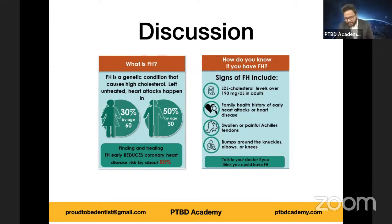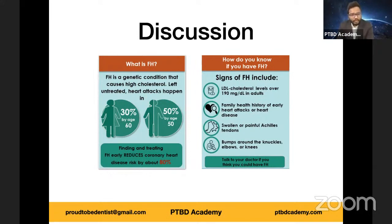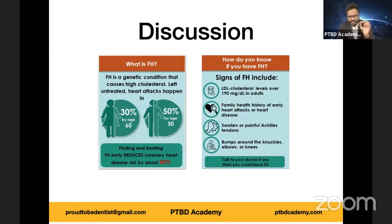Familial hypercholesterolemia is a genetic disorder with considerable frequency. One of the main diagnostic lab parameters is LDL levels — in adults, LDL cholesterol over 190 mg/dL, and in children over 160 mg/dL, coupled with a family history, allows us to suspect or diagnose familial hypercholesterolemia. These threshold values are very important.